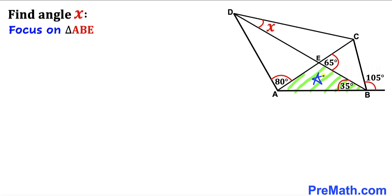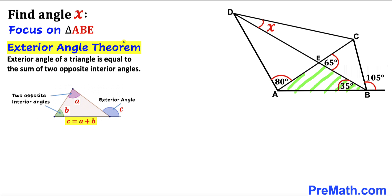Let's apply the exterior angle theorem again: the exterior angle of a triangle equals the sum of the two opposite interior angles. In our given problem, 65 degrees is the exterior angle and it must equal the sum of the two opposite interior angles — 35 degrees and this unknown angle. So this angle must equal 30 degrees, because 30 plus 35 gives us 65 degrees.